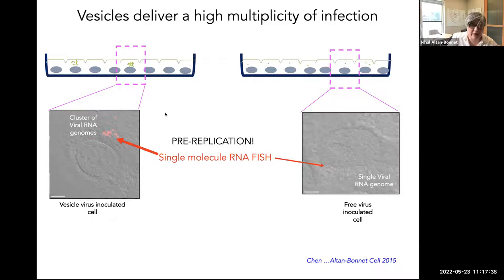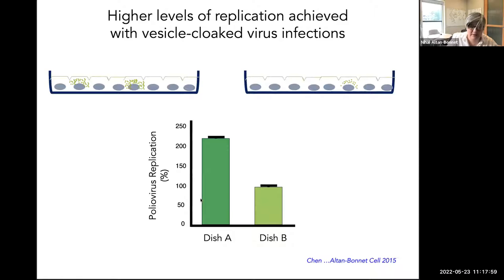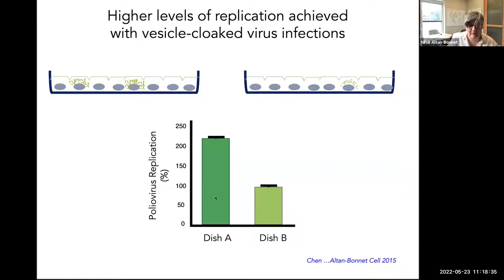In dish A with the vesicle inoculum, most cells were devoid of viral input, but you would occasionally find a cell with a cluster of viral genomes that had entered — which makes sense because the vesicle transmits en masse a group of viral genomes. But what was really surprising was when we followed these dishes: rather than fixing them prior to replication, we let them replicate one cycle and then measured virus produced. We expected dish B would have replicated more, since nearly every cell got a viral input — but the results were the opposite.